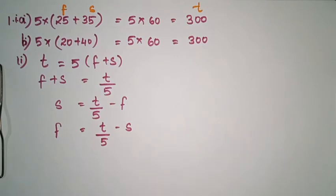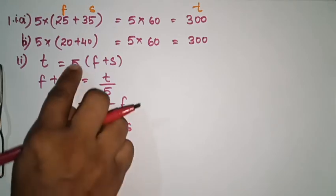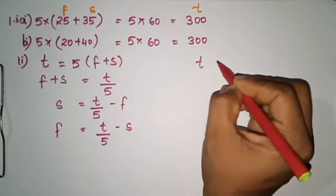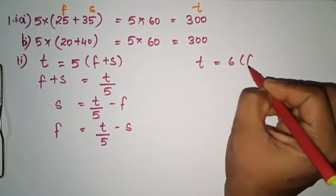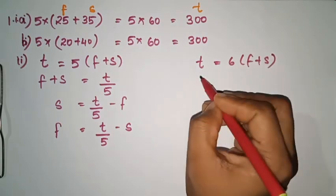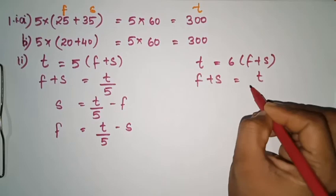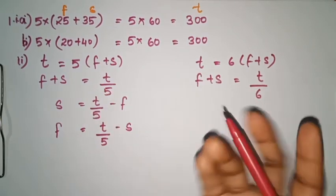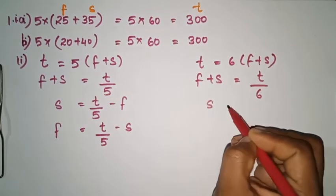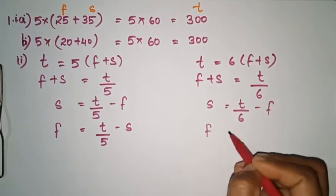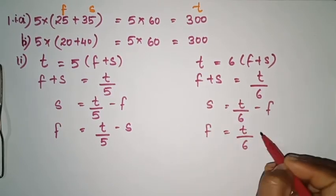What if each child is given 6 biscuits instead of 5? Then T is equal to 6 into (F plus S). Rearranging: T by 6 equals F plus S, so F is equal to T by 6 minus S.